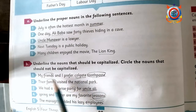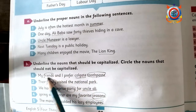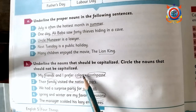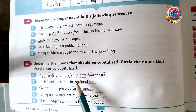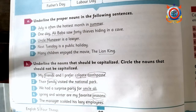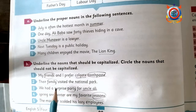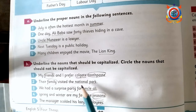'My friends and I prefer Colgate toothpaste.' Here friends and toothpaste are common nouns, so circle friends and toothpaste. Colgate is a proper noun, so underline it. In the next sentence, family is a common noun so circle it, and the national park name should be capitalized and underlined.